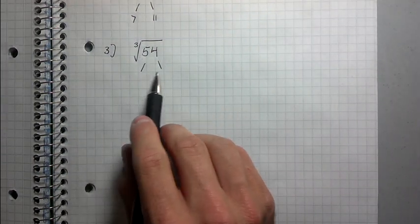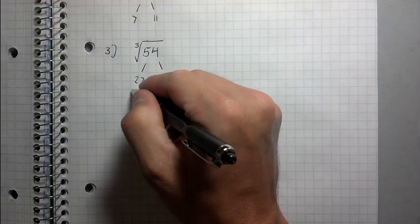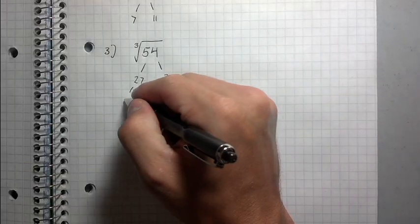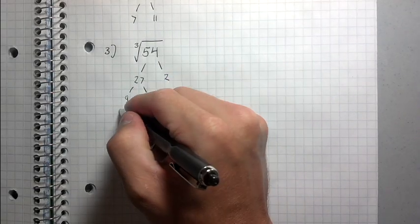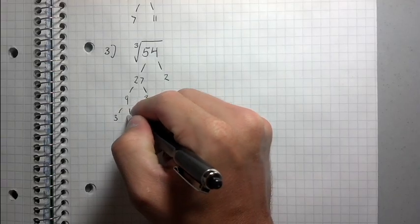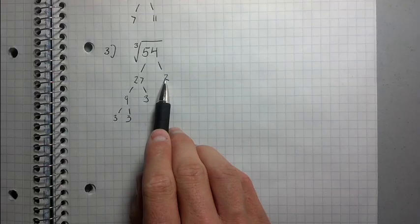So two numbers that make 54. How about 27 and 2? 27 times 2 is 54. Alright, how about numbers that make 27? I can think of 9 and 3. Alright, how about numbers that make 9? 3 and 3. Okay, so I'm done because these are all prime numbers. 3 is a prime number and 2 is a prime number.